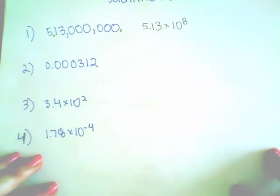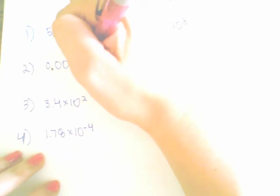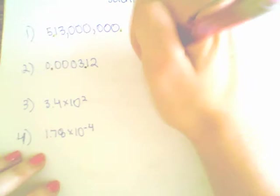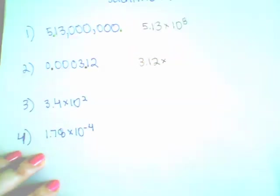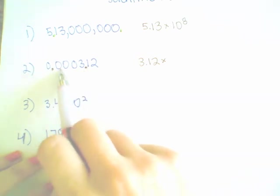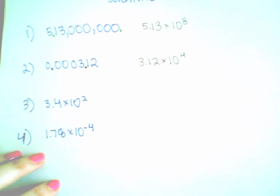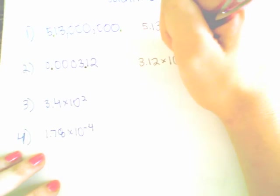In the next example, the decimal place is already present. There's a decimal right here. And we want our decimal place to be after the first non-zero digit, which is 3. So I want the decimal to be between the 1 and the 2. So 3.12. The distance between where we have the decimal right now and where we want it to be is 1, 2, 3, 4. However, our original number was less than 1, so therefore this exponent is negative.